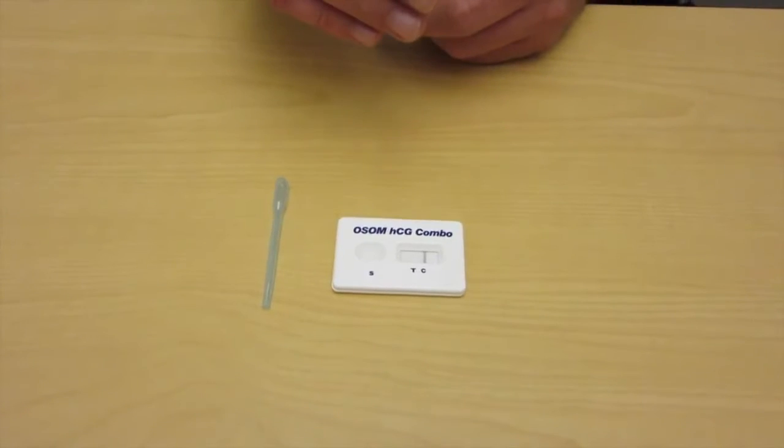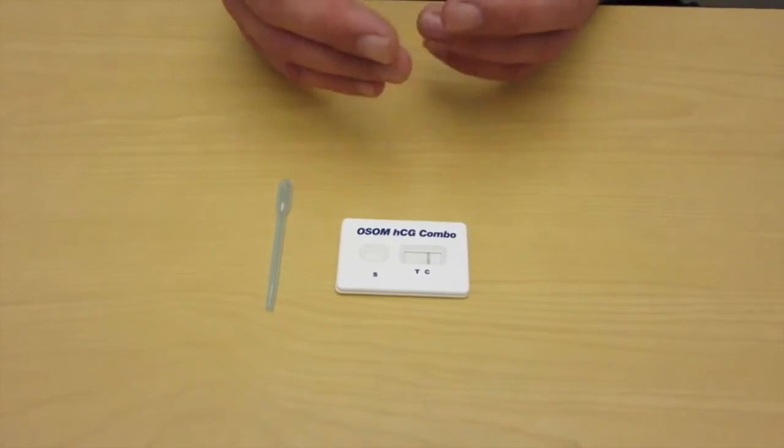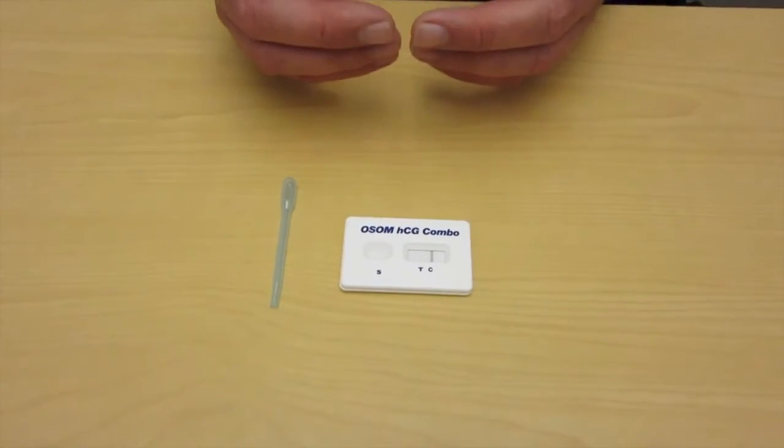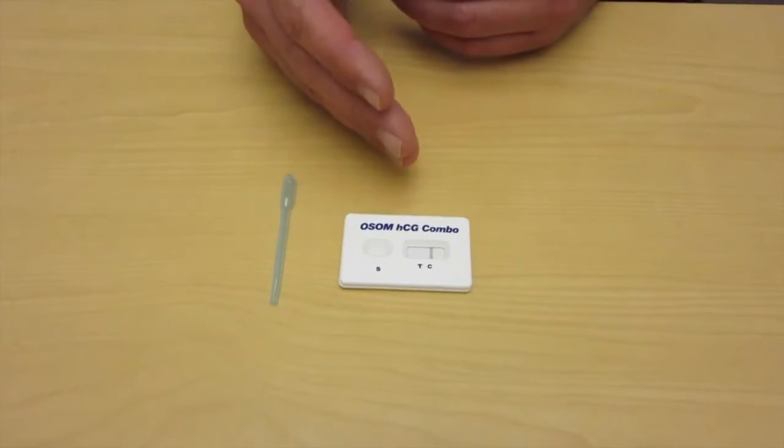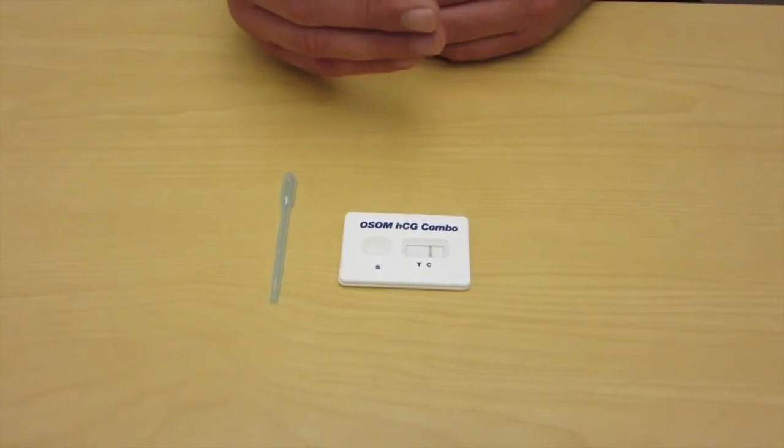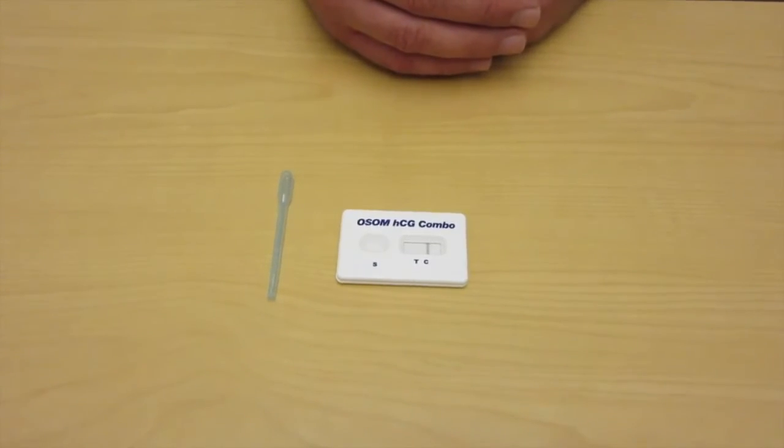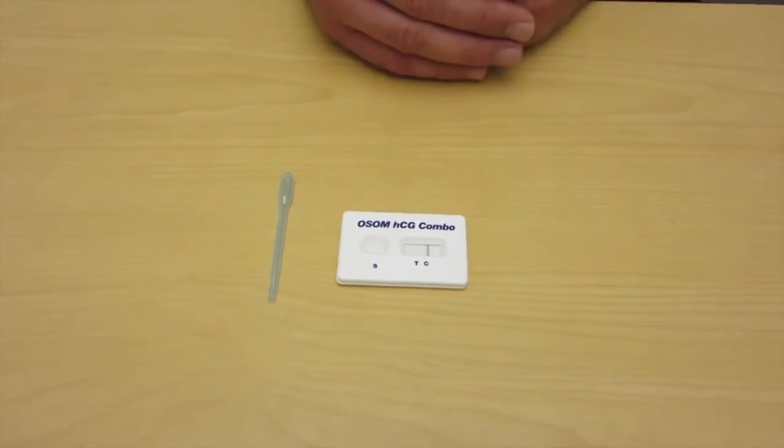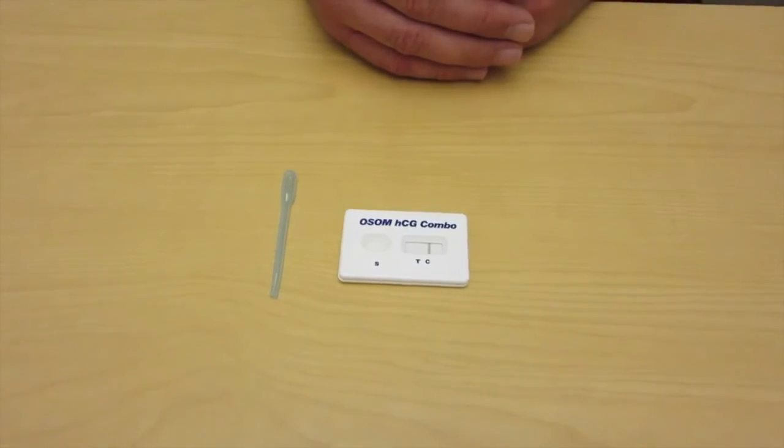Other things to consider here, if the urine is incredibly dilute, essentially clear as water, low specific gravity, you may not get a positive result even though they are pregnant. So always have an index of suspicion, and pull the trigger on the quantitative HCG if you feel like there's any reason to not trust the result that you're getting here. And that's it.